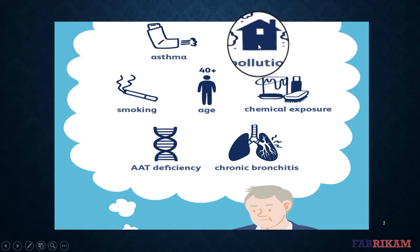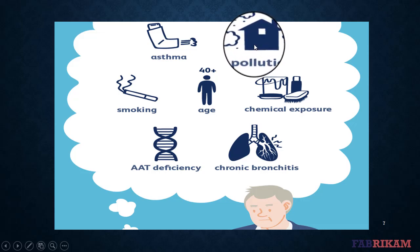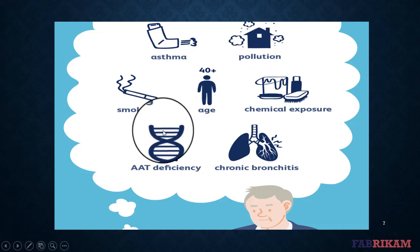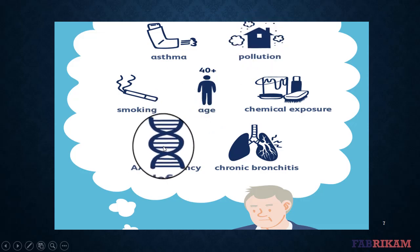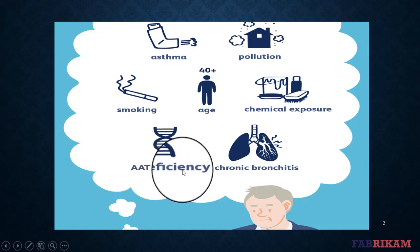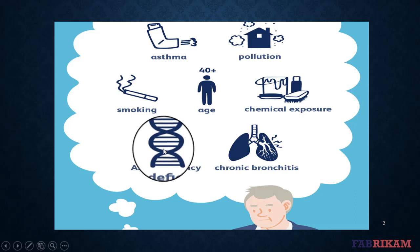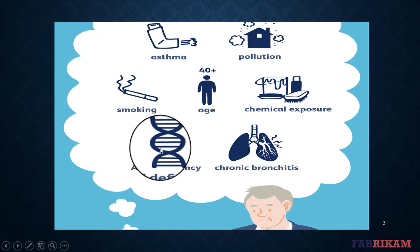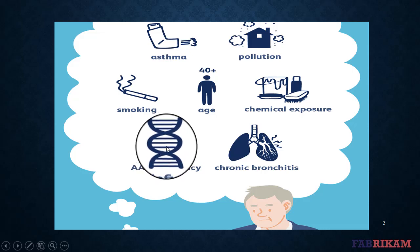In developing countries, homes are often poorly ventilated, forcing families to breathe fumes from burning fuel used for cooking and heating. There may also be a genetic predisposition — up to an estimated 5% of people with COPD have a deficiency in a protein called alpha-1 antitrypsin. This deficiency causes the lungs to deteriorate and can also affect the liver. There may be other genetic factors at play as well.